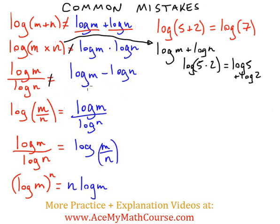This is actually the misinterpretation of a rule, which is basically if I had log of m divided by n, then I would get log m minus log n.